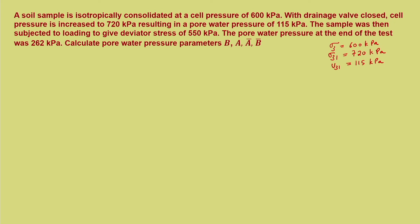The sample was then subjected to loading. Without opening the drainage valve, the soil is subjected to loading to give a deviator stress sigma d equal to 550 kilo Pascal. Deviator stress is the stress applied axially in addition to sigma 3. The pore pressure at the end of the test was 262 kilo Pascal — this is the total cumulative pore pressure accumulated in the soil sample from the beginning to the end, so uf equals 262 kilo Pascal.